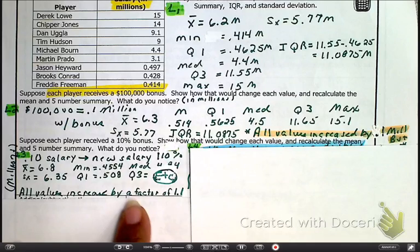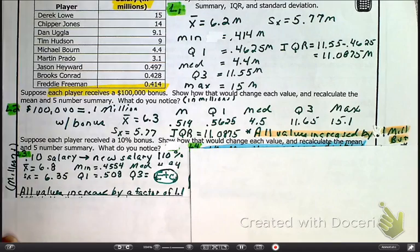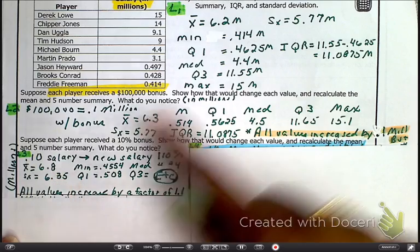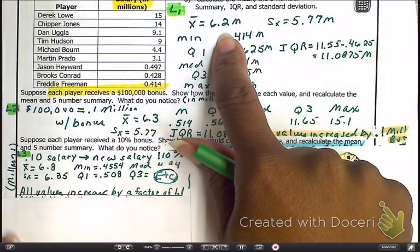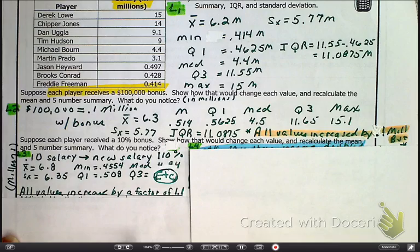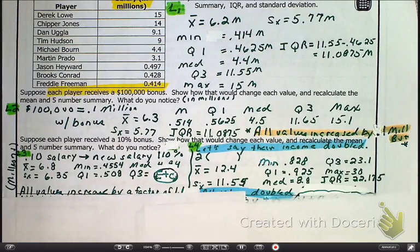But, when they ask you what did they notice, what did you notice? All the values increased by a factor, or multiple, you want to say, of 1.1. And, if you don't believe it, do the math. Let's divide your 6.8, divided by the 6.2, and you'll see it's a differential of 1.1. So, as we look at all of this, what does all of this mean, as we just break down what truly happens?